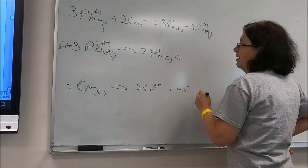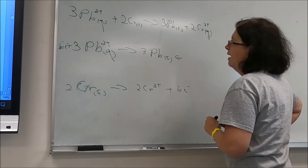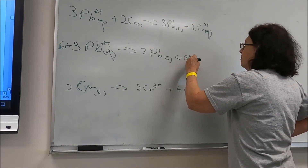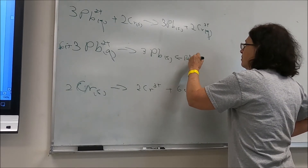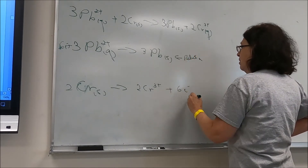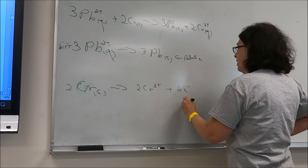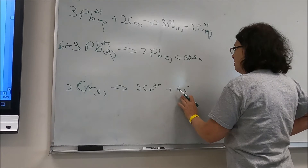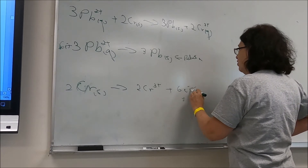The top half reaction is our reduction — it occurs at the cathode. The bottom half reaction is our oxidation — it occurs at the anode.